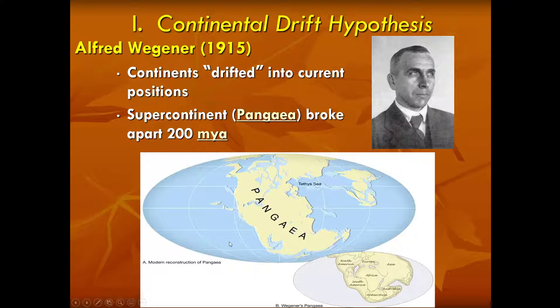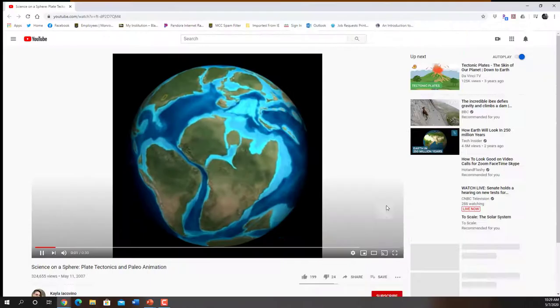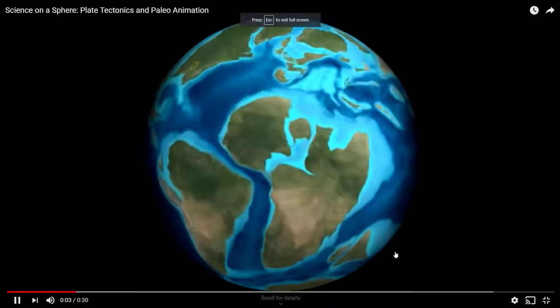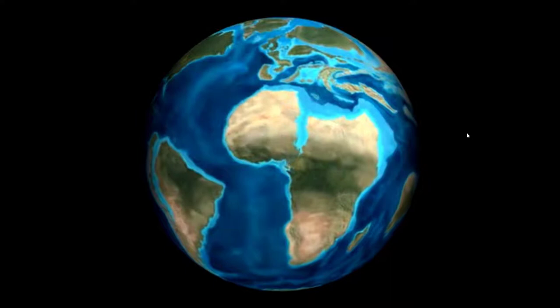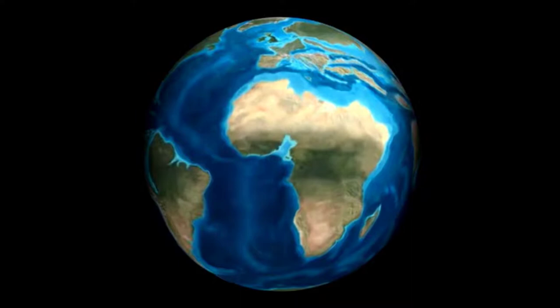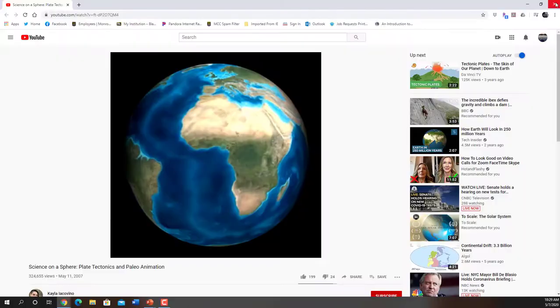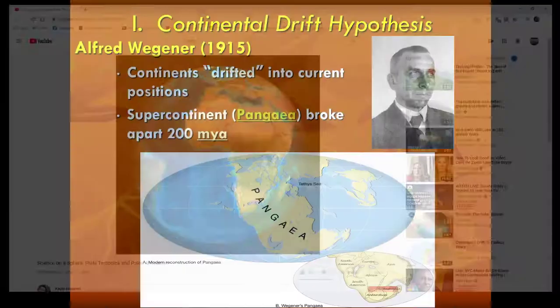This is a more modern reconstruction of Pangaea that includes the continental shelves, which are parts of the continents actually inundated with seawater. There are a couple of animations I want to show you. The first is a slow animation depicting what happened over time as Pangaea broke apart. This is Science on a Sphere, which comes from Chris Scottese, a paleogeographic expert who creates a lot of cool animations.